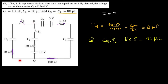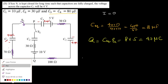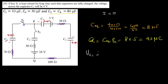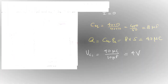The battery sends 40 microcoulomb of charge, which accumulates on the capacitor plates: +40 and −40 microcoulomb on each capacitor in series. The voltage across C1 is therefore V_C1 = Q / C1 = 40 microcoulomb / 10 microfarad = 4 volts. Option B is correct.